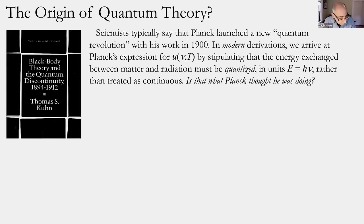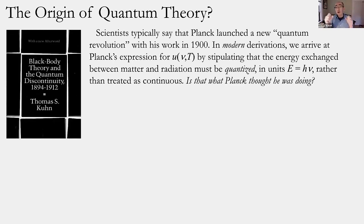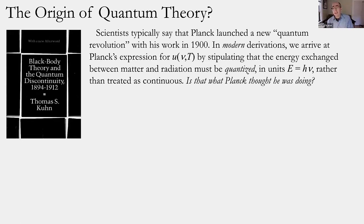Kuhn argued that Planck's own route to his famous equation looked nothing like how we interpret the result today. In a modern textbook derivation, we get Planck's result by requiring that energy exchange between matter and radiation can't take any continuous value but must come 'quantized' in units of Planck's constant h times the frequency ν — rather than treating energy exchange as continuous, as one would for Maxwellian waves. Kuhn was asking: did Max Planck think that's what he was doing in 1900?